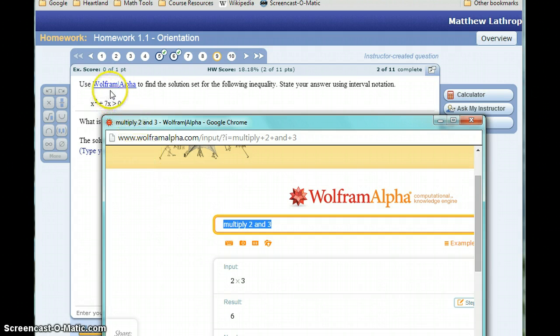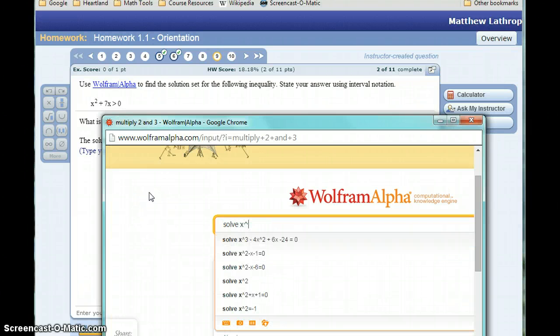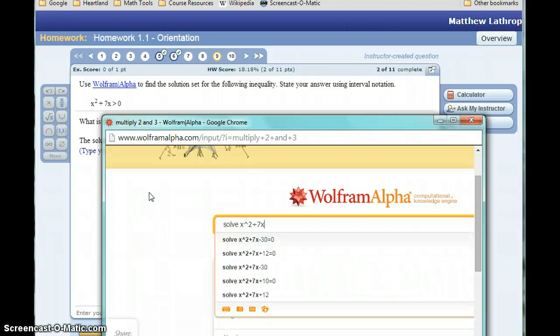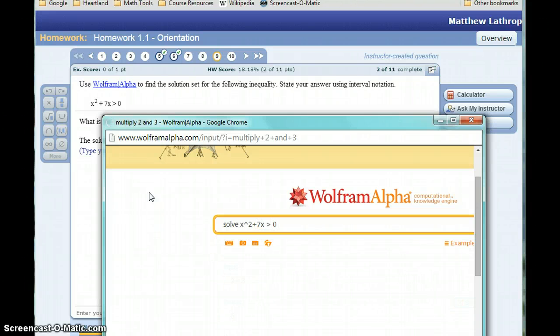In this first homework question that we're going to take a look at, we want to find the solution set for the following inequality. We want to solve x squared plus 7x is greater than 0. So in WolframAlpha, we'll just ask it to do that: solve x squared plus 7x is greater than 0.